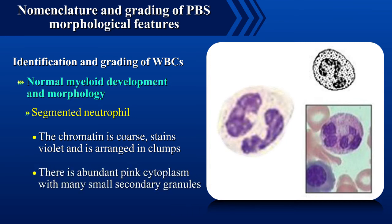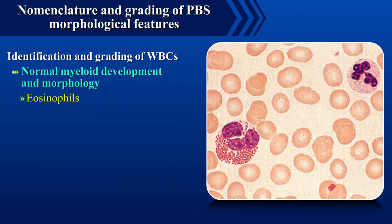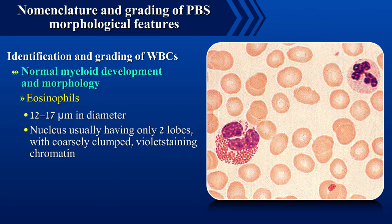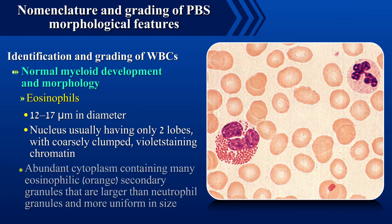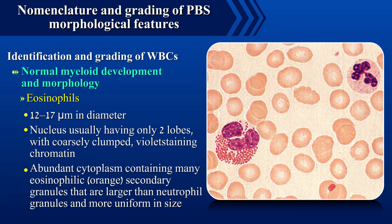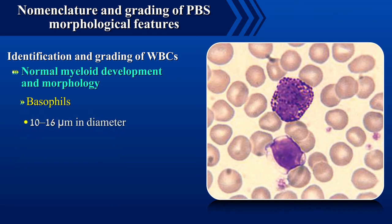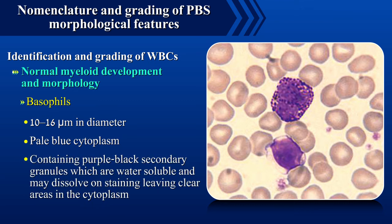There is abundant pink cytoplasm with many small secondary granules. Eosinophils are 12 to 17 microns in diameter with the nucleus having only 2 lobes with coarsely clumped violet staining chromatin. There is abundant cytoplasm containing many eosinophilic or orange secondary granules that are larger than neutrophil granules and more uniform in size.